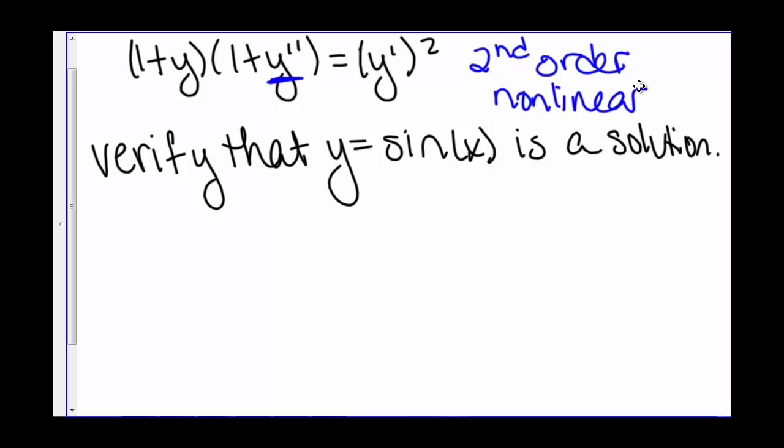Let's say we are asked to verify that y = sin(x) is a solution. Our first step in verifying that we have a solution is to find the first derivative, which is cos(x), and our second derivative, which is negative sin(x).